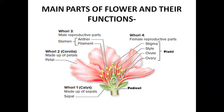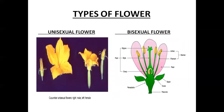A flower may consist of either stamen or pistil or both. Based on this, a flower is of two types: unisexual or bisexual. Rose and china rose are composed of all four parts, so they are known as bisexual flowers. Whereas papaya and cucumber are composed of either the male reproductive part or the female reproductive part, so they are known as unisexual flowers.